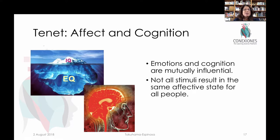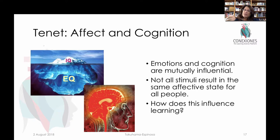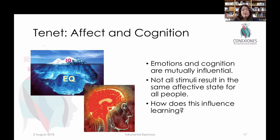We know that emotions and cognition are mutually influential. Going back to the huge point of human variability, not all of the same stimuli result in the same affective state for all people. Sometimes people see a clown and laugh like crazy, and sometimes people see a clown and freak out. Based on personal experiences and how you've grown up, that influences the way you react to new stimuli.